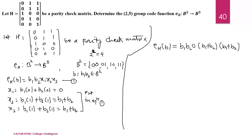Now let us find the image of each element in B^2. First, E_H(0,0): here b1 = 0 and b2 = 0. The first two digits are 0,0 as they are. The third element is 0. The fourth element is b1 + b2 = 0 + 0 = 0. And the fifth is also 0. So E_H(0,0) = (0,0,0,0,0).